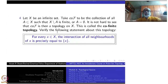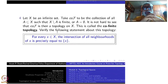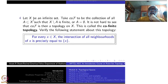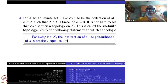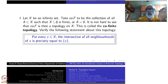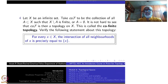Another interesting and quite celebrated topology: for this I have to start with an infinite set. The co-finite topology, denoted cof, is the collection of all subsets A of X such that the complement X∖A is finite, together with the empty set. I have to include the empty set explicitly to take care of axiom (T1), even though the complement of ∅ is not finite.